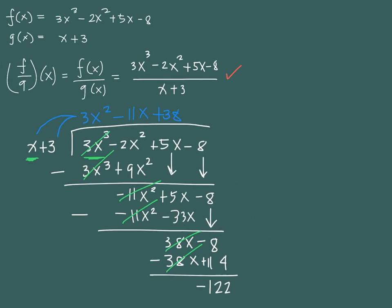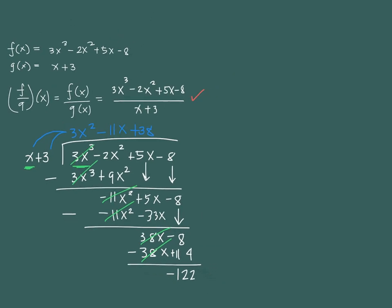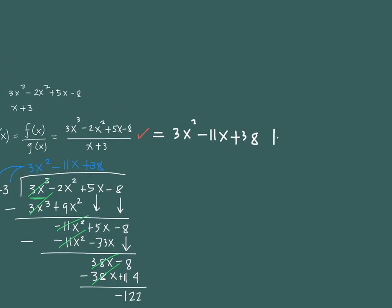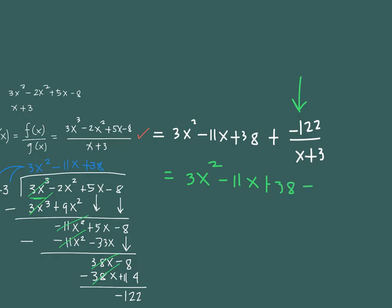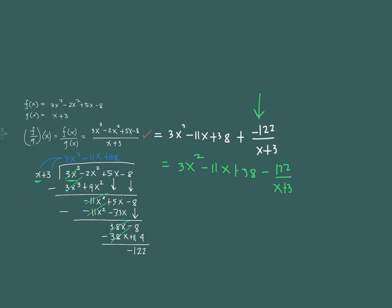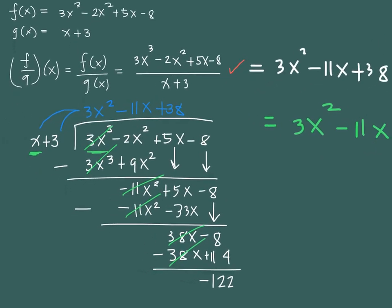We can also write this as 3x squared minus 11x plus 38 minus 122 over x plus 3. That's our final answer. Long division is not commonly preferred because there are many areas where you can commit mistakes, which is why a simpler method called synthetic division was introduced.